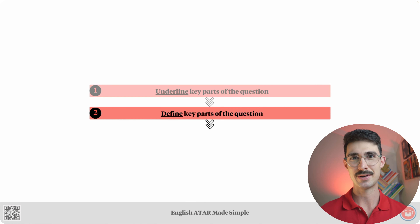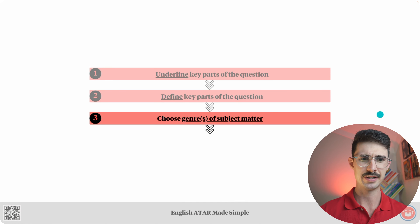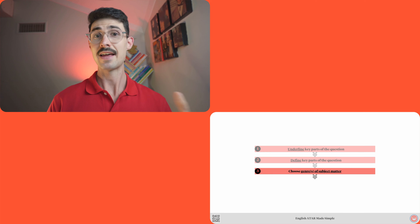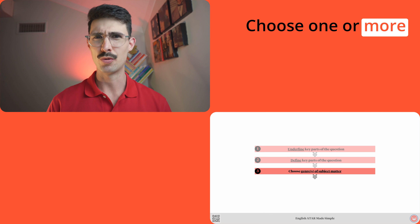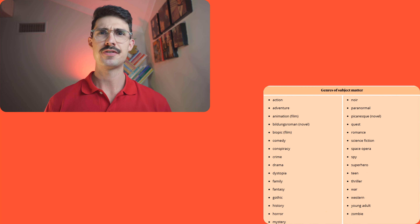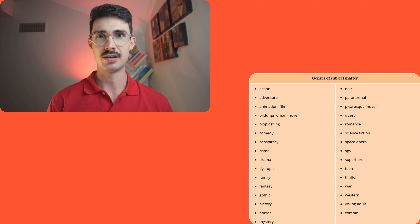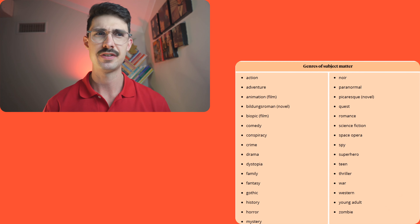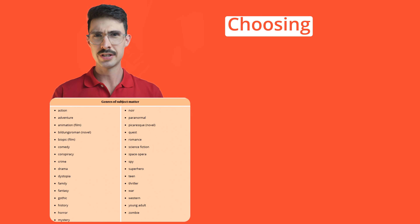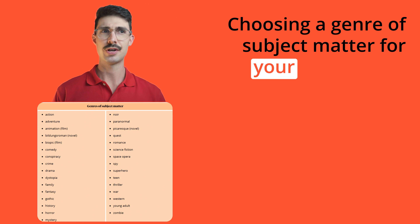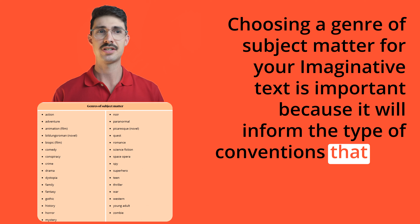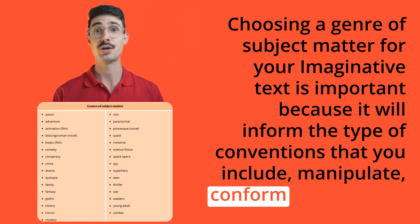Step number three is where we start to go off the beaten path a little bit: choose your genre or genres of subject matter. At this step you should choose one or more genres of subject matter that your text will fall within. Check out the genres of subject matter table in the relevant lesson in module two if you're feeling hazy on this type of genre. Choosing a genre of subject matter is important because it will inform the type of conventions that you include, manipulate, conform to, etc.